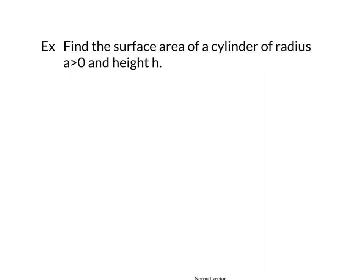Now let's compute a surface integral. In this first example, we find the surface area of a cylinder of radius a and height h. From a previous math class, the surface area of a cylinder is 2πr² + 2πrh. The 2πr² represents the top and bottom caps, which our parametric description doesn't include — just the outer surface. So we expect to get 2πah as our answer.